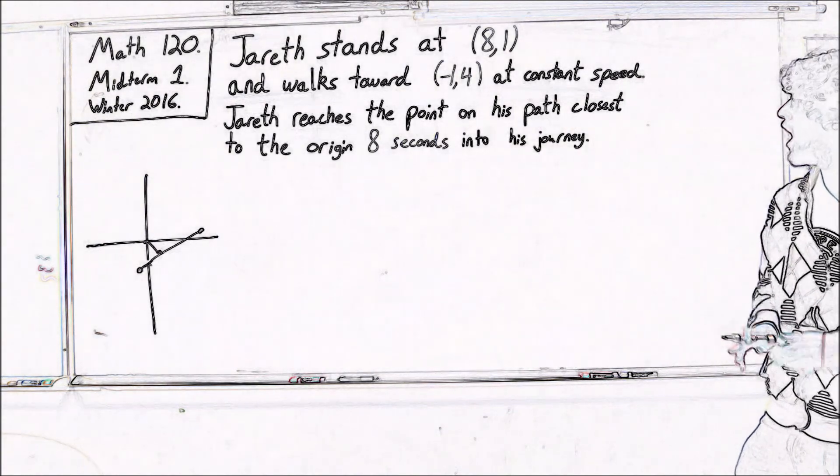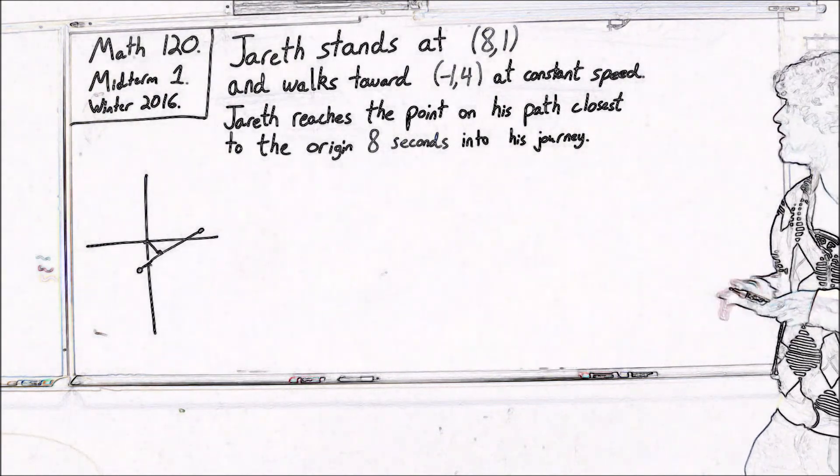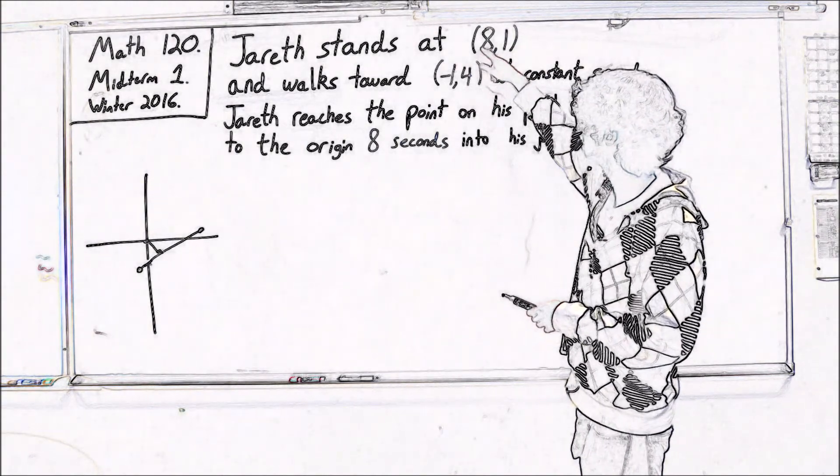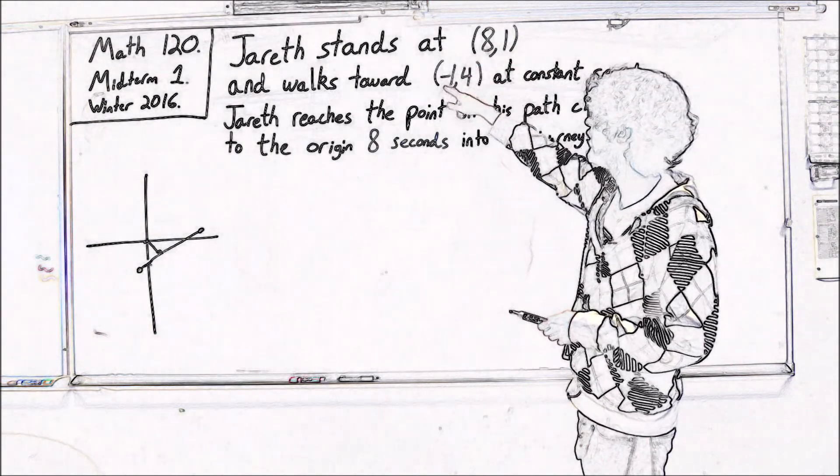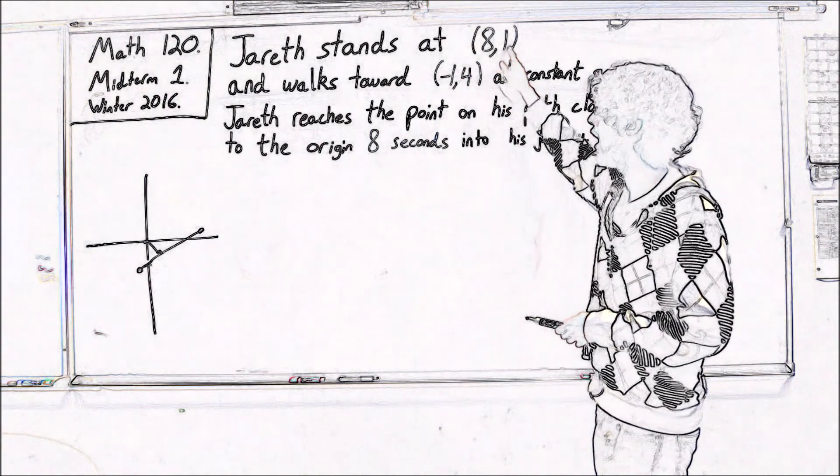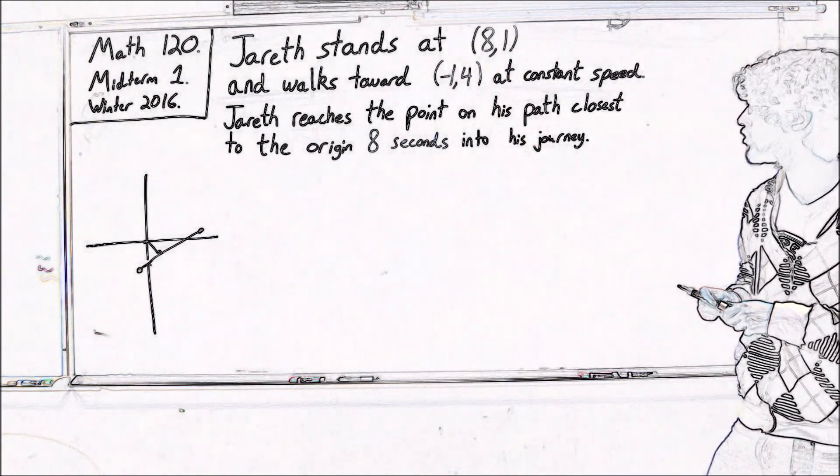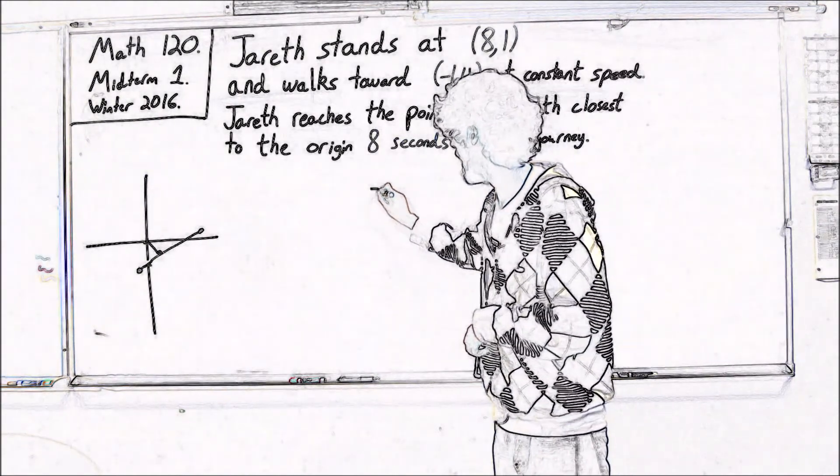So the slope of this line I can calculate quite easily. I can see that from here to here we decrease x by 9 while we increase y by 3. So the rise over run over that stretch is a rise of 3.